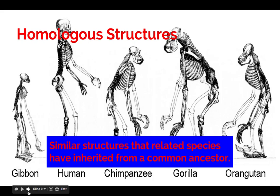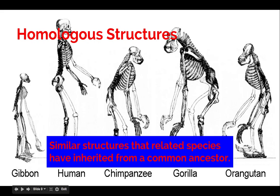Homologous structures — we've already unpacked that root word. Homo means same. When we're talking about homologous structures, we're looking at structures within related species that are similar, and those similarities lead us to conclude that perhaps they've come from a common ancestor. If you look at all these different primates in the background of the slide, you can see quite a number of homologous structures — the hand structure, the structure of the arm, the structure of the leg, the ribcage, and the skulls too. Lots of homologous structures.